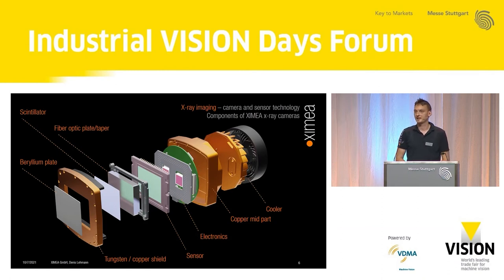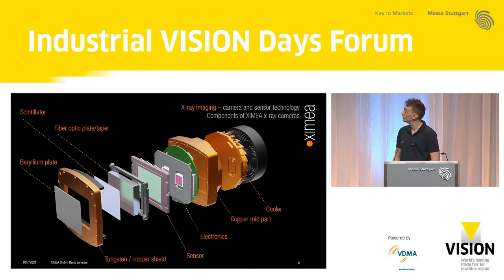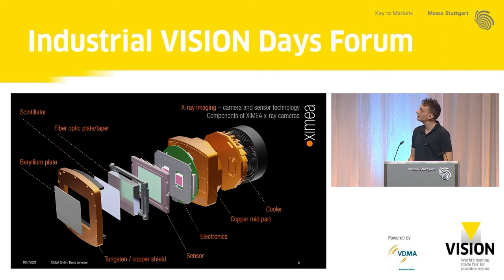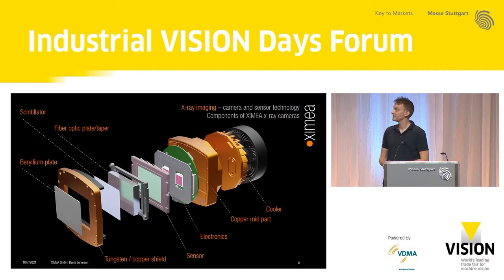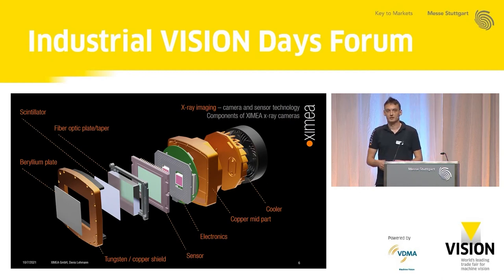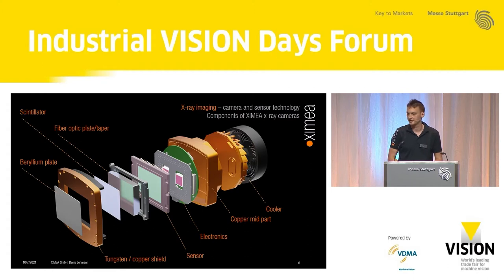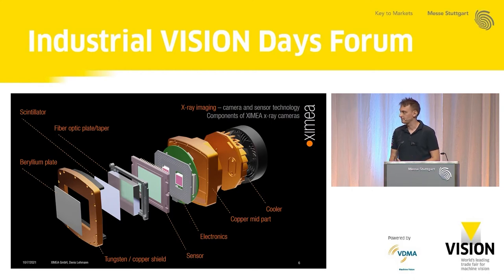A XIMEA X-ray camera looks like this. At the front, you have a beryllium plate — beryllium is transparent, or mostly transparent, to X-rays. X-rays pass through the beryllium plate and hit the scintillator screen, which emits visible light. That visible light is then channeled through the fiber optic plate onto the sensor. We also provide a tungsten-copper shield up front to protect the electronics and sensor from radiation.